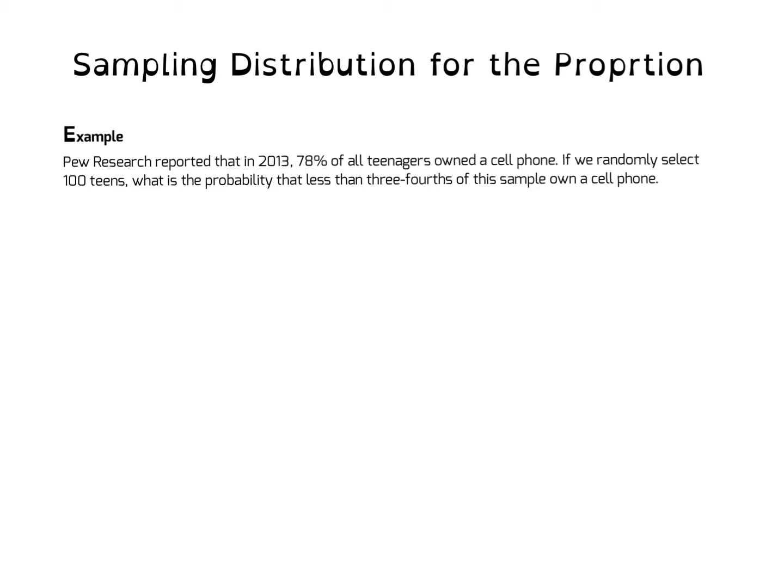So, what we have here is a problem that says, Pew Research reported that in 2013, 78% of all teenagers owned a cell phone. If we randomly select 100 teens, what is the probability that less than three-fourths of this sample owns a cell phone? The first thing I want you to know is we need to identify that we're talking about a proportion here. We can tell we're talking about a proportion because we see this percentage right here, the 78% of all teenagers. And this 78% of all teenagers means we're talking about a population value.